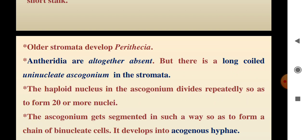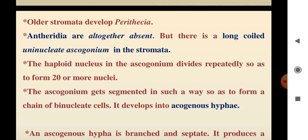When the stroma becomes mature, it develops a structure called perithecia. The perithecia are fruiting bodies. The antheridia — male sex organs — are completely absent. But there is a long coiled uninucleate ascogonium within the stroma. The ascogonium is a female reproductive structure which is uninucleate.